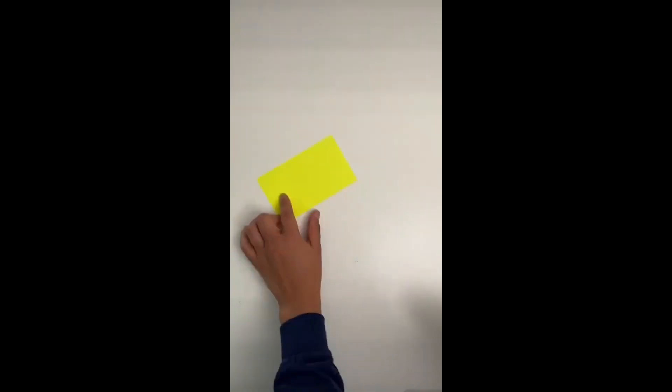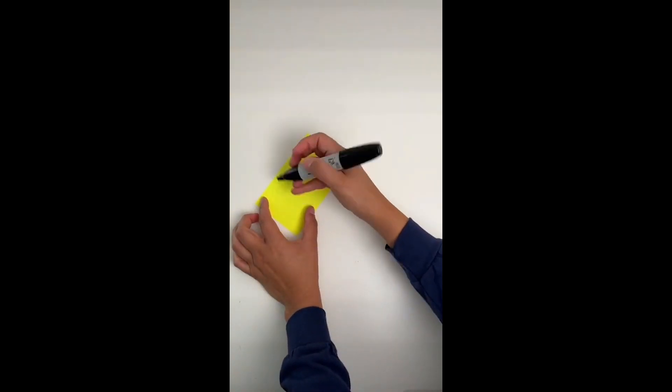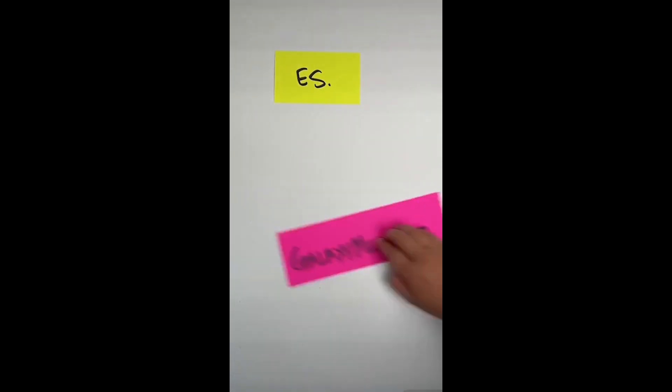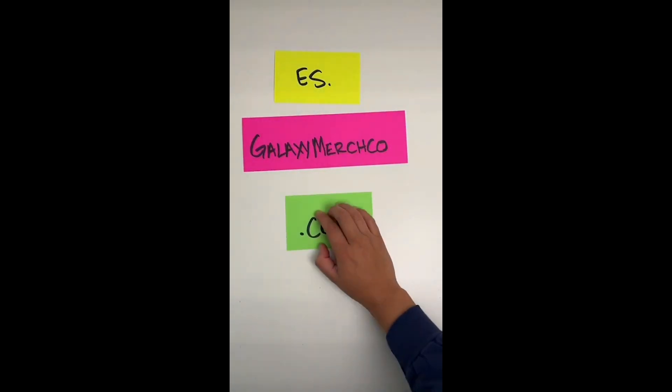For example, if you wanted to have a Spanish language site in addition to your primary English version, in most cases it would make sense to host it on something like es.galaxymerchco.com, rather than have them both coexist on one shared site, which would be confusing for people.